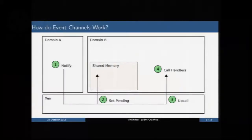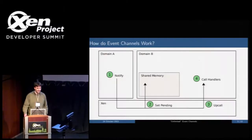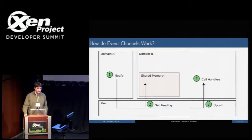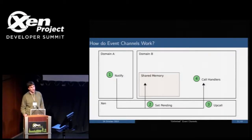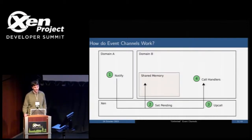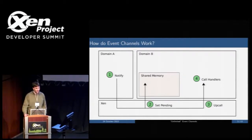So how do they work? In this example, domain A wants to send an interrupt to domain B. First it does a notify hypercall into Xen. Xen then writes into a piece of memory shared by the target domain with Xen, setting something that says there's an event pending. It then triggers an upcall into the guest, and the guest looks at its shared memory, sees the pending event, and calls the appropriate handler.